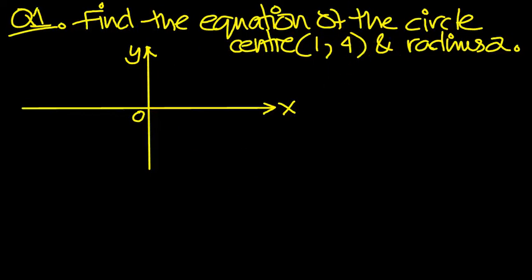Find the equation of the circle centre 1,4 and radius 2. So we could mark off 1,4 here, couldn't we, as a coordinate.